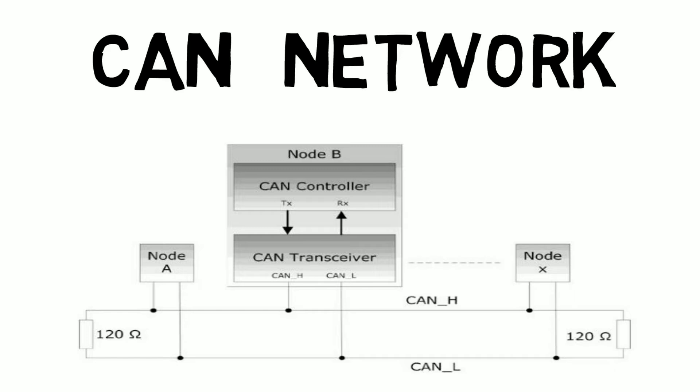PDUs are converted to CAN signals as in the legacy method. The CAN frame is formed in the CAN controller. Once the signal is out of the CAN controller, you have a transmitter and receiver — so that we call it a transceiver.